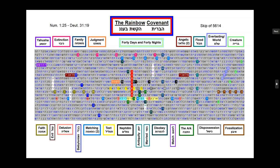Shalom. Today I'd like to show you a Bible code called the Rainbow Covenant. Here is the access term, right here in the red, going up, and it's found at a letter skip of 5,614. This access term is only found once in all of the Torah, and it spans from Numbers chapter 1 to Deuteronomy chapter 31.